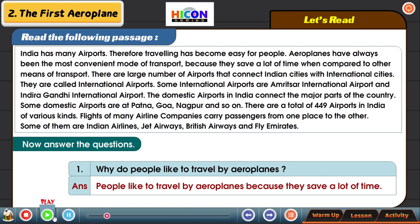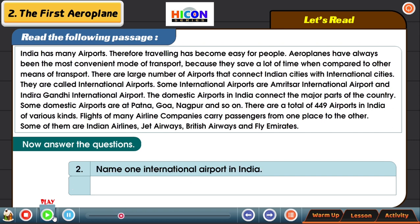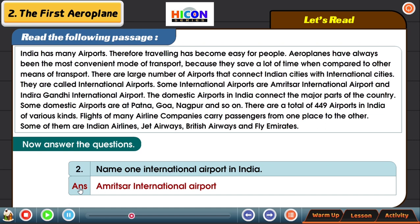The second question: name one international airport in India. Amritsar International Airport is an international airport. Indira Gandhi International Airport in Delhi is also an international airport. You can also write the name of any international airport near your place.